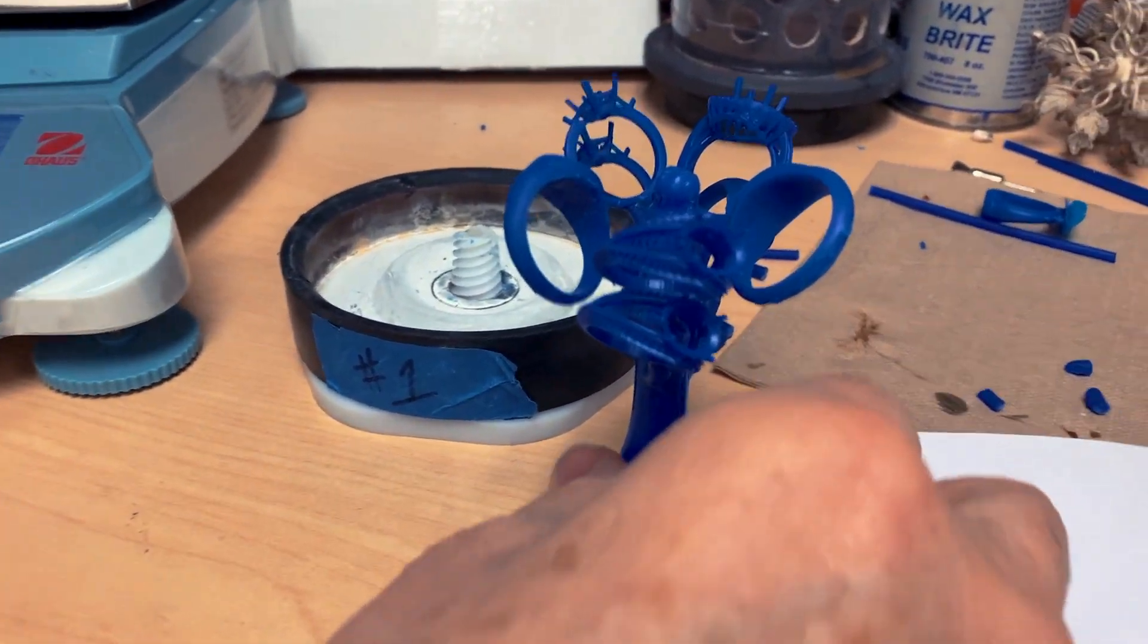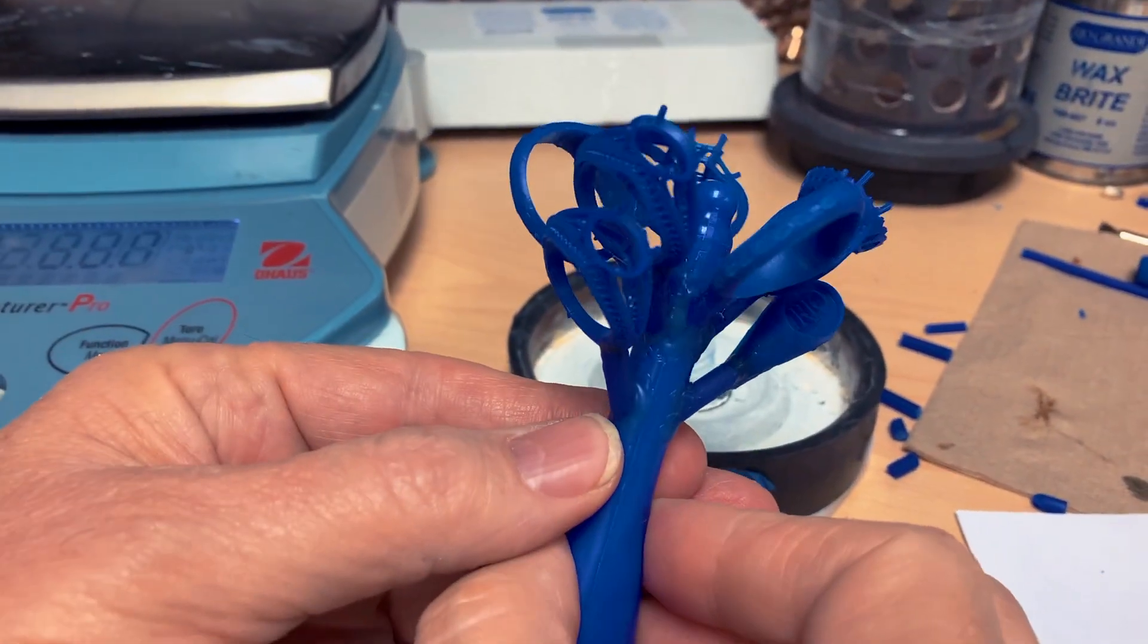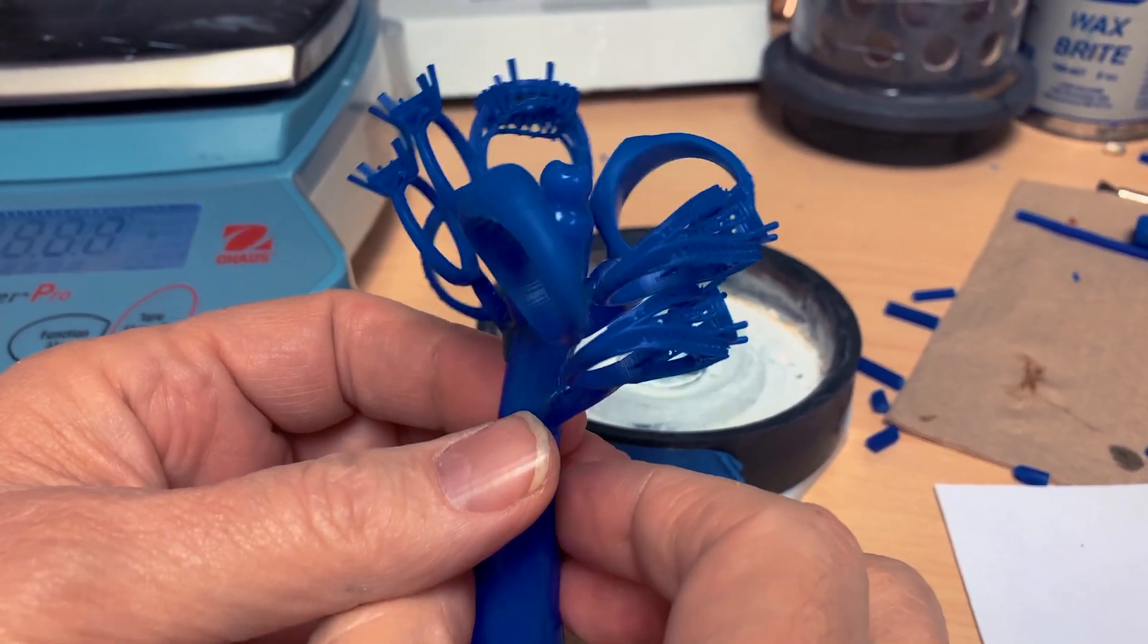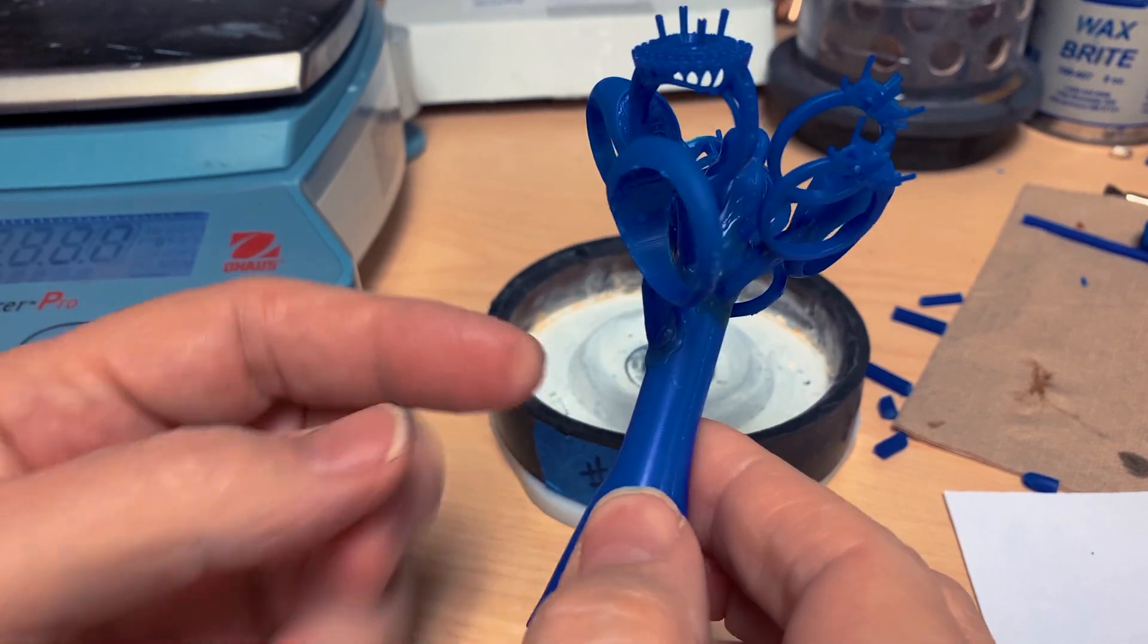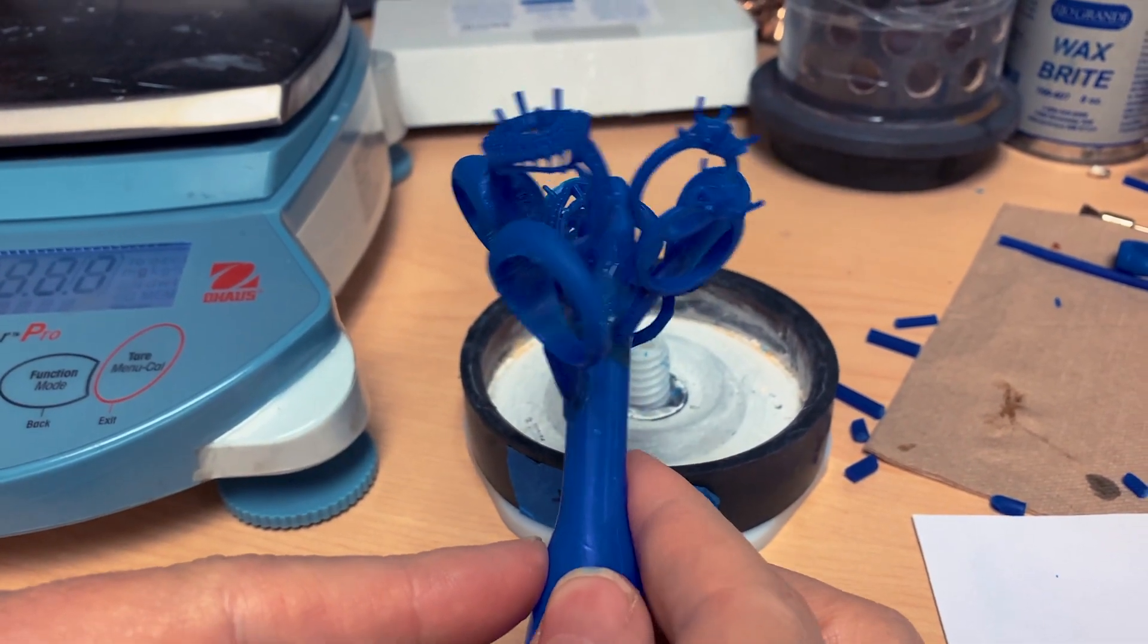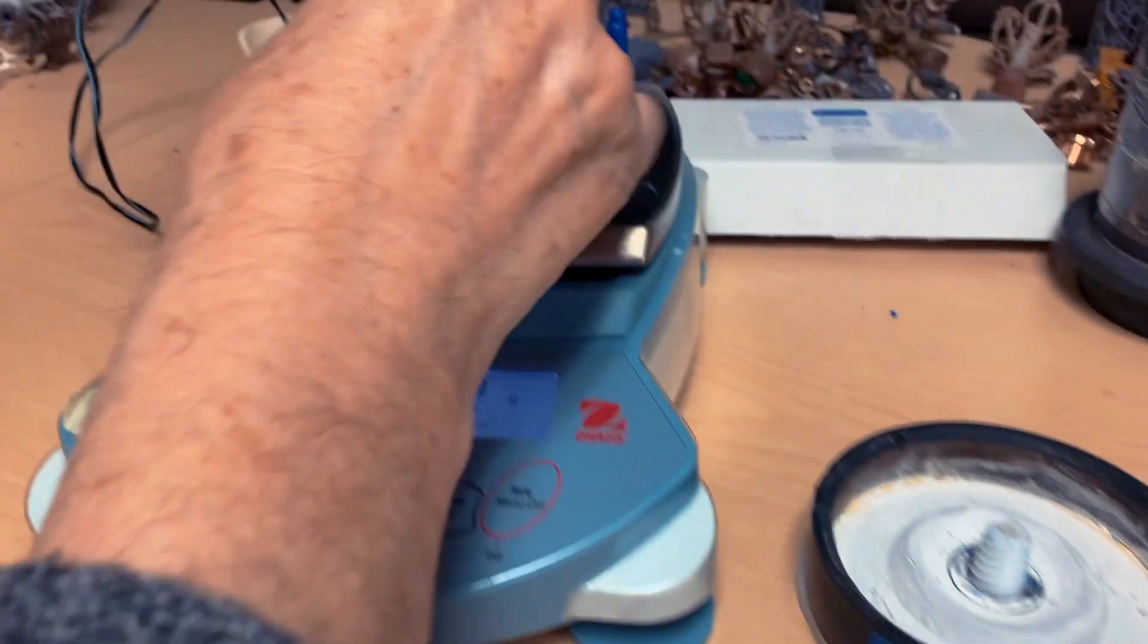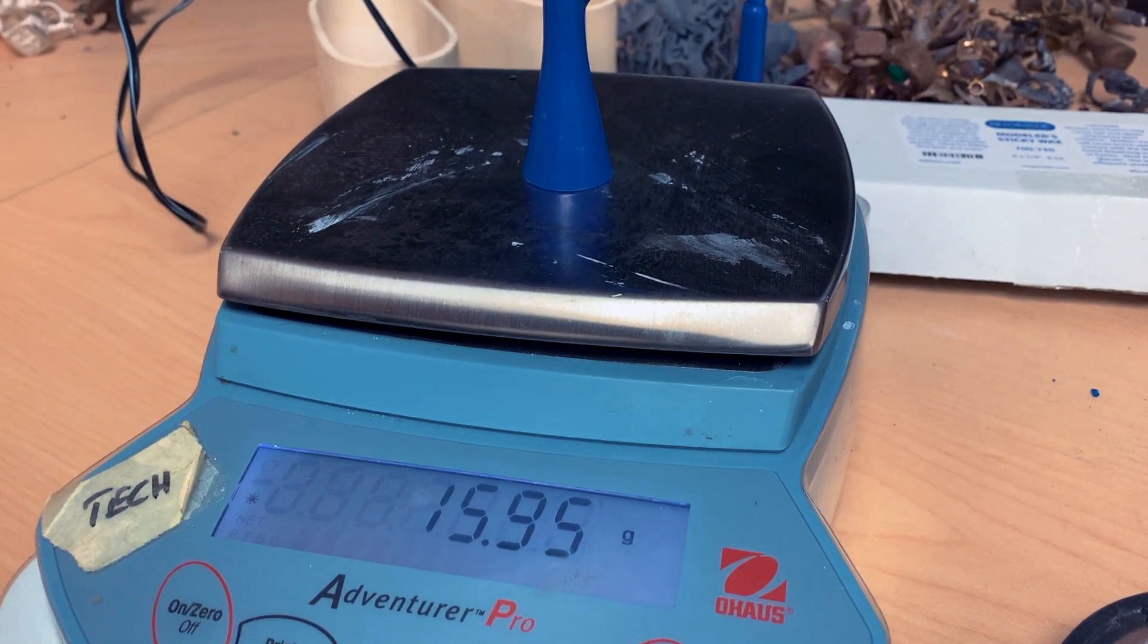Okay, so now that we've attached all of the rings to the tree, as you can see, we've got, I don't know, how many, about seven or eight of them on there. We need to get a weight. We need to figure out how much this weighs so we can calculate the amount of metal needed. So, what I'm going to do is I'm going to weigh the entire thing. And that looks like 1595.